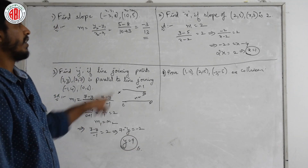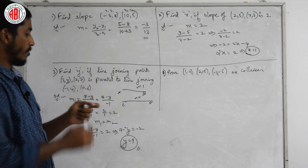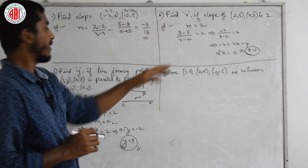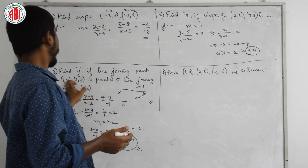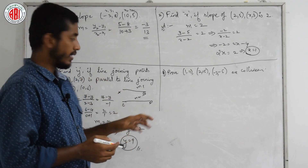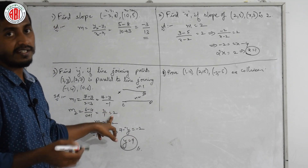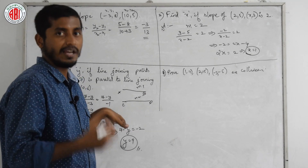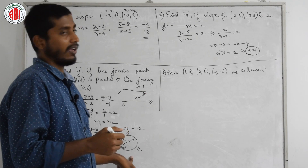This is how we find variables when given slopes are either parallel or a slope value is given. Similarly, if they ask about perpendicular lines, we find M1 and M2 the same way, but use the condition M1 × M2 = −1, then substitute and simplify to get the value of y.